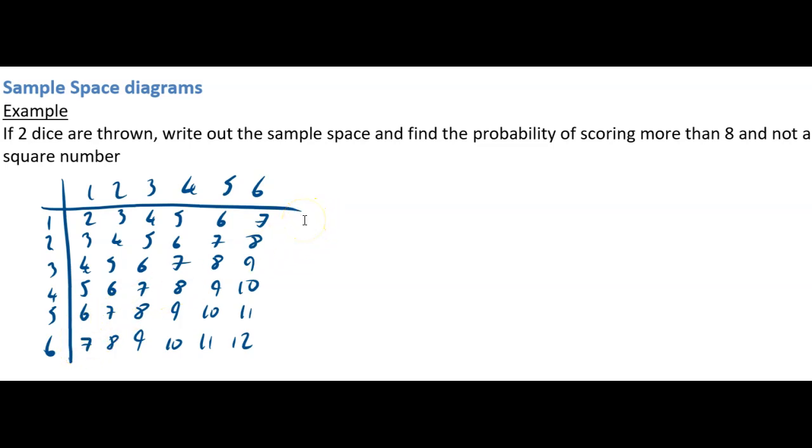What you've got to do in this question is find the probability that x is greater than 8 and it is not a square number. So I'm just going to circle the ones which that applies to. That's probably the easiest way once you've got your sample space done.